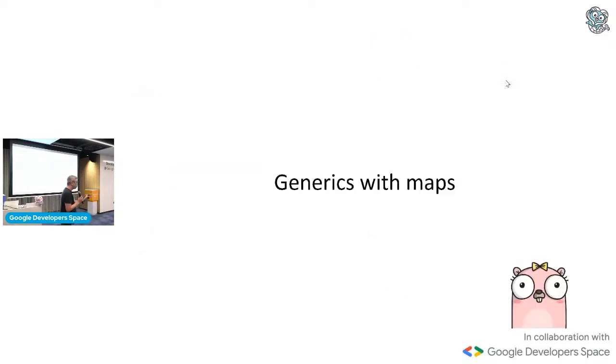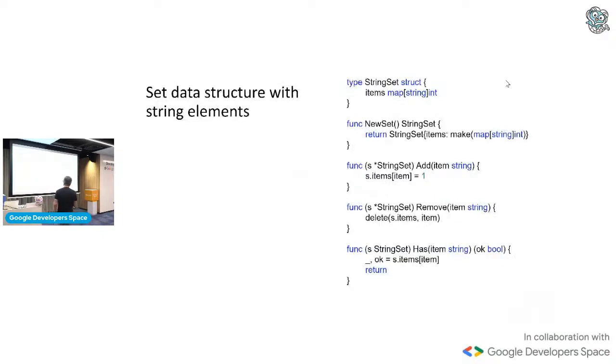So if you were using it like this, you now cannot push an int and then a string afterwards because you already specified that you only want ints. Okay? You can only do it when you send any. Right? So that was structs and slices. Let's talk about the maps here.